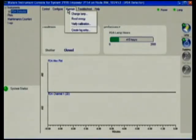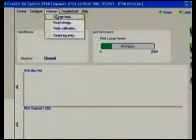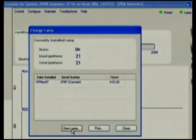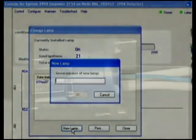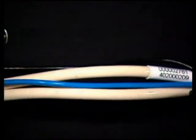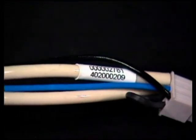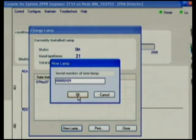From the console, select Maintain Change Lamp. Click New Lamp. Enter the 9-digit serial number for the new lamp. The serial number is found on the label attached to the lamp connector wire. Then click OK.